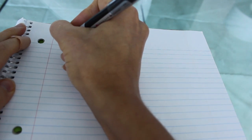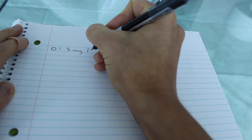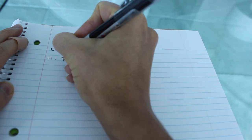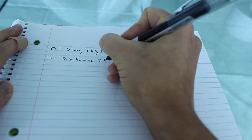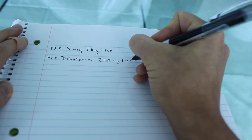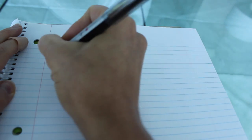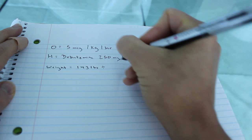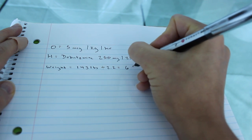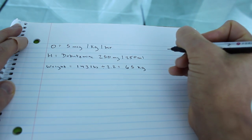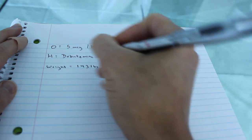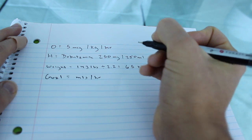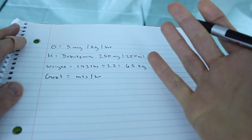Okay, so let's say the doctor ordered 5 micrograms per kilogram per hour. On hand, we have dobutamine 250 milligrams per 250 mLs. Our patient's weight is 143 pounds, so we need to put it in kilograms. We divide that by 2.2 and we get 65 kilograms. You can always round up or round down, whatever is closest to the weight. Our goal is mLs per hour, because that's what we calculate all of our infusions at.